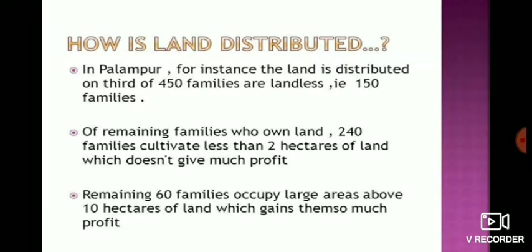Now, how is land distributed in Palampur? Out of 450 families, 150 families are landless. Of the remaining families who own land, 240 families cultivate less than 2 hectares — which does not give much profit. The remaining 60 families occupy large areas above 10 hectares of land, which gives much more profit.